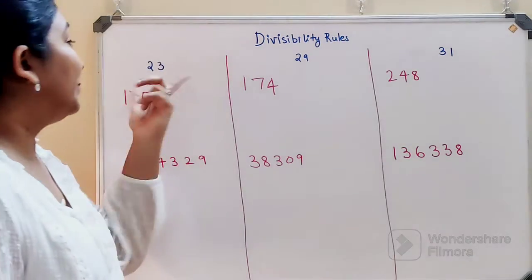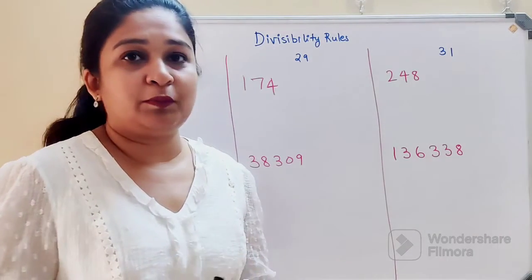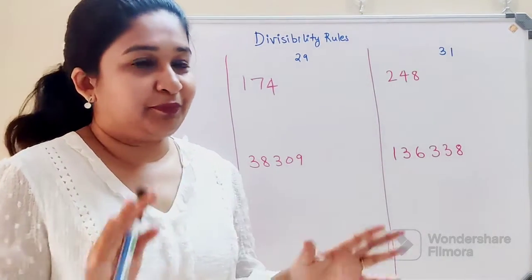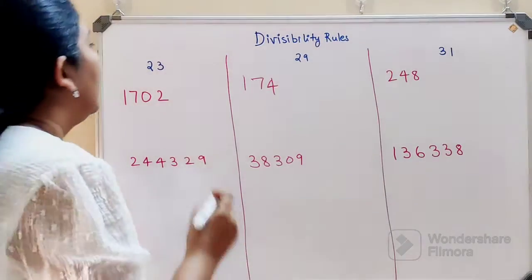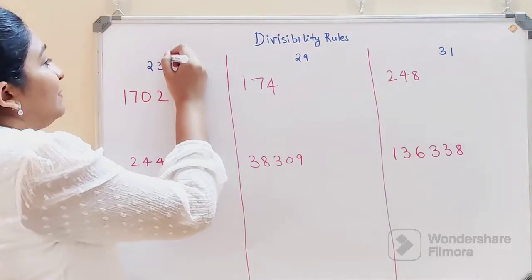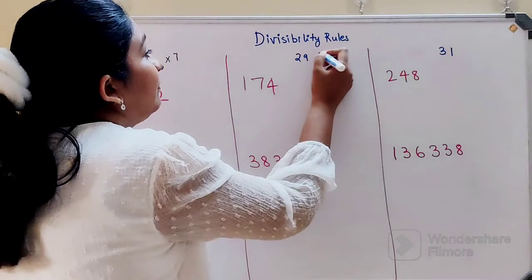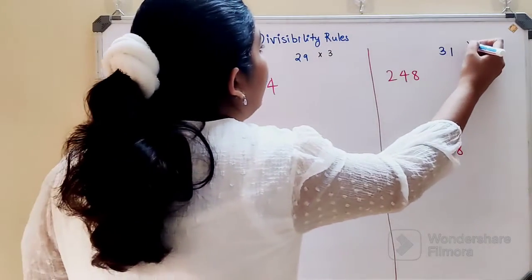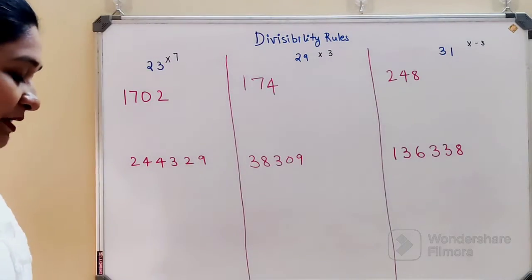If you struggle with 23, 29, or 31, trust me this video is going to be super helpful. Now please understand the basic method: for 23 you multiply by 7, for 29 you multiply by 3, and for 31 you multiply by minus 3.